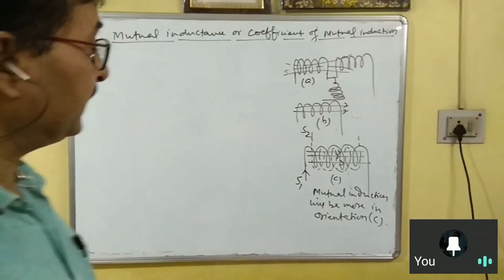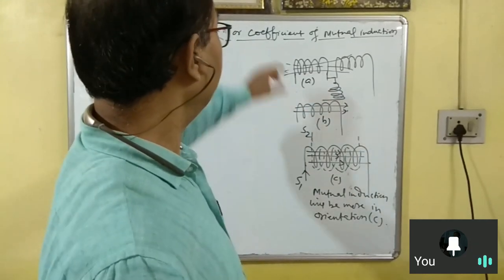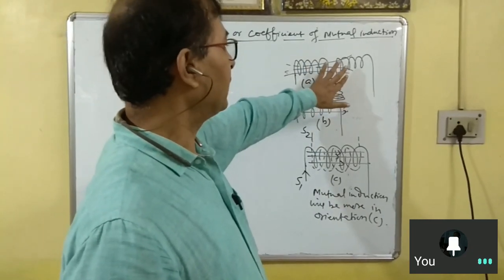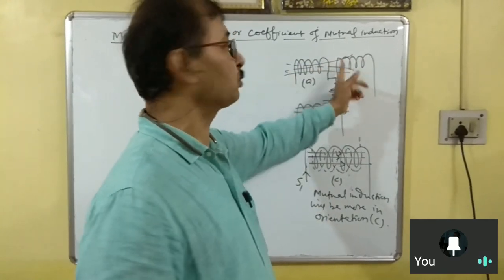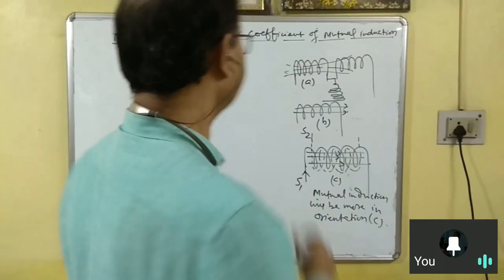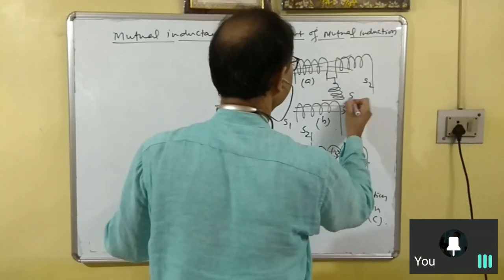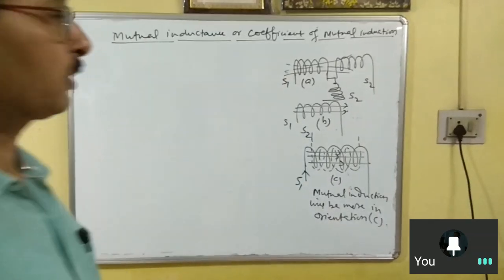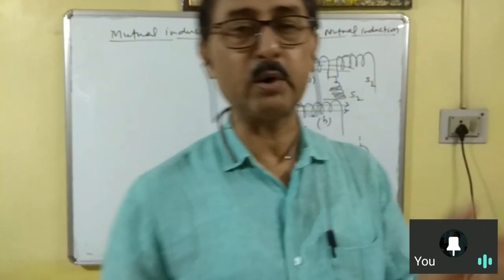In orientation C, maximum field lines are linked with the secondary. In orientation B, flux is zero — no flux will be linked with the secondary. In the first case, orientation A, flux is present but maximum field lines may not be linked depending upon the separation between the two coils. The more the separation, the less will be the flux linked with the secondary coil. So mutual induction depends upon the relative orientation between the coils.